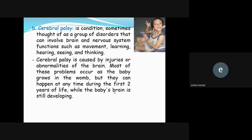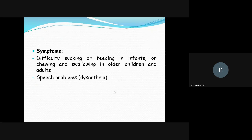Cerebral palsy is a group of disorders involving brain or nervous system function, such as movement, learning, hearing, seeing, and thinking. It is caused by injuries or abnormalities of the brain, most often occurring as the baby grows in the womb, but can happen at any time during the first two years of life while the brain is still developing. Symptoms include difficult sucking or feeding in infants, difficulty chewing in older children and adults, and speech problems.